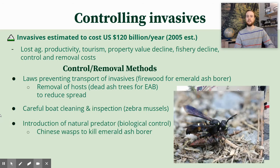We can also introduce natural predators — what's called biological control. If you think back to unit five, we learned about this with integrated pest management (IPM), and we can do the same for invasives. A great example is the Chinese wasp — three different species have been recently introduced to areas like Michigan and other parts of the Northeast and Midwest to control the emerald ash borer. This particular wasp paralyzes the emerald ash borer and carries it back to feed to its larvae. There are also parasitic wasps that lay their eggs in the emerald ash borer's larvae — great examples of biological control.